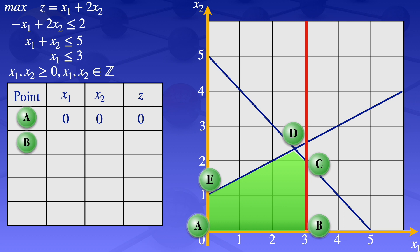At point B, we have x1 = 3 and x2 = 0. These values give us z = 3. At point C, we have x1 = 3 and x2 = 2. Substituting these values into the objective function, we get z = 7.